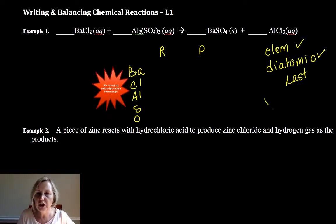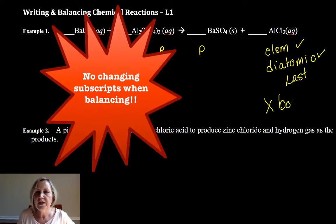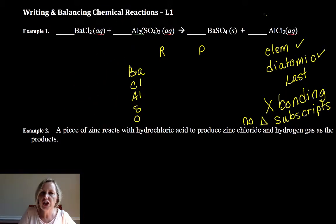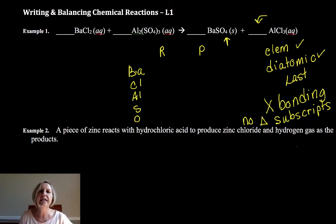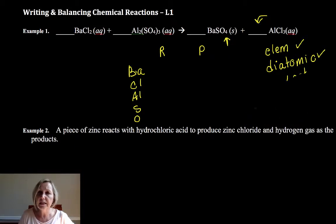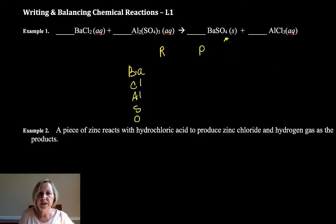We cannot alter bonding, so you cannot change subscripts when you balance. All we can change are coefficients in front. You cannot change the subscripts that tell you how many are bonded within that compound. Those are some basic guidelines, but it really is a lot of trial and error — I strongly recommend you use a pencil, especially if you're just starting.